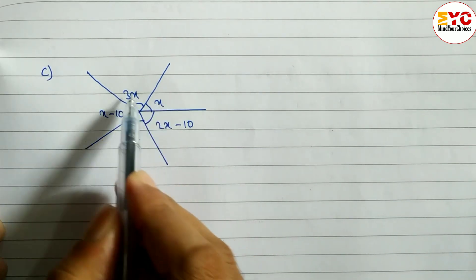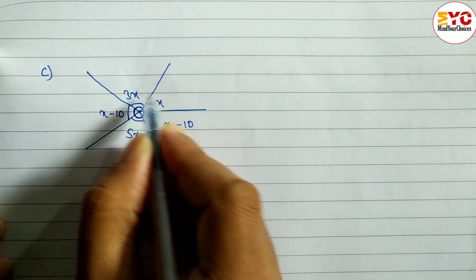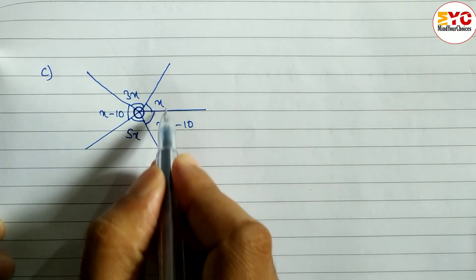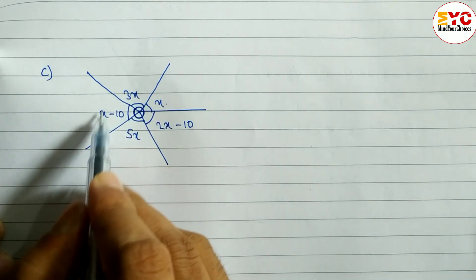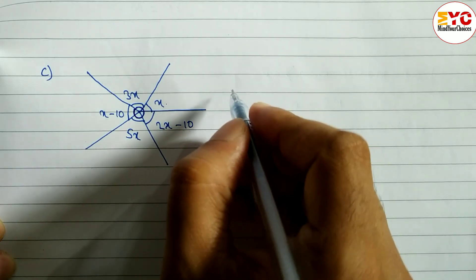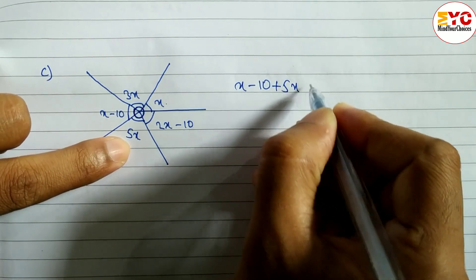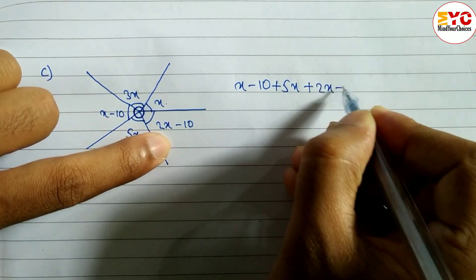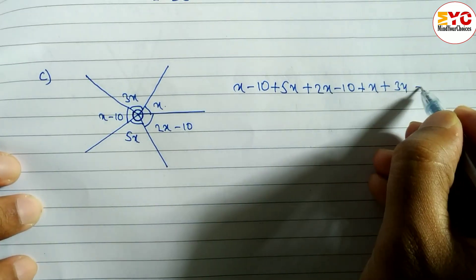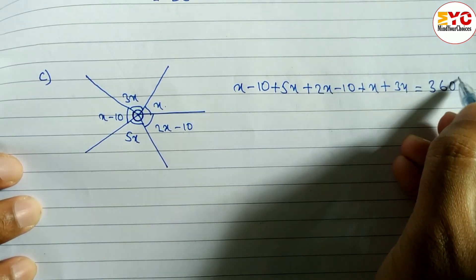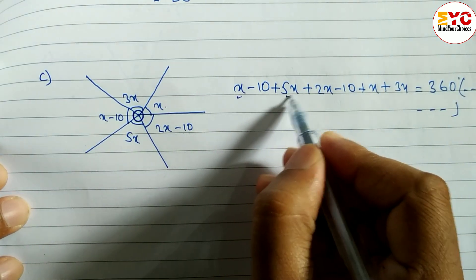Now look at the last question, C. Here five angles are given — 1, 2, 3, 4, 5 — and the reason is again a complete turn. All variables are the same x. When you add all, you get 360 degrees. Starting from: x minus 10 plus 5x plus 2x minus 10 plus x plus 3x equals 360 degrees.